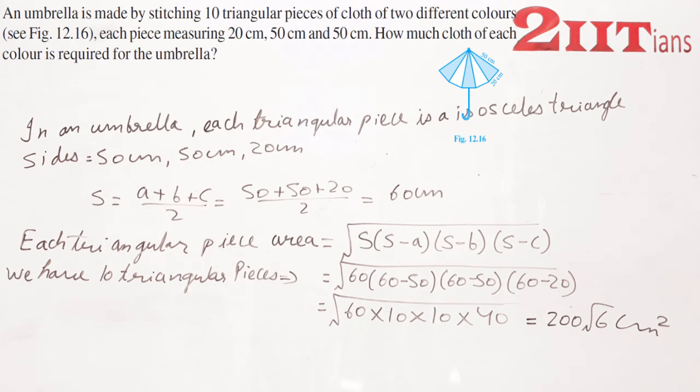10 triangular pieces हैं, 5-5 are different. 5 are shaded in the figure, 5 unshaded white.